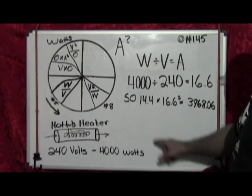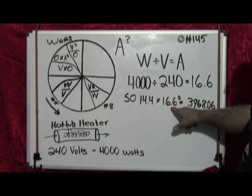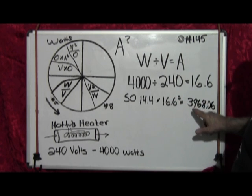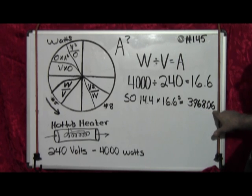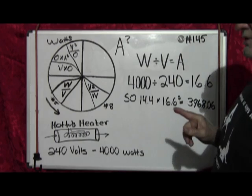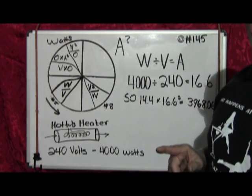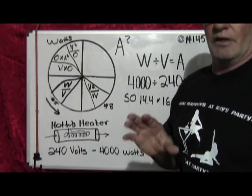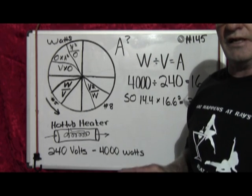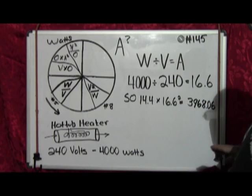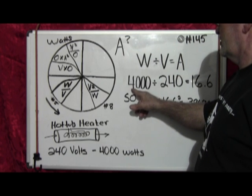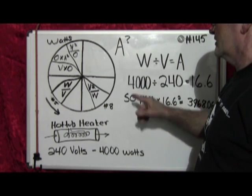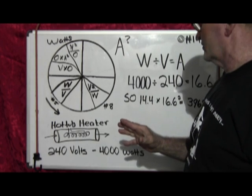So 14.4 times 16.6 squared is equal to 3,968.06 watts, which is close enough to 4,000. Now let me remind you on something here. A lot of these tests are multiple choice. And if they make you do the math on the test and they give you a multiple choice and you just assume it's going to be 4,000 because that's usually what the faceplate rating is,